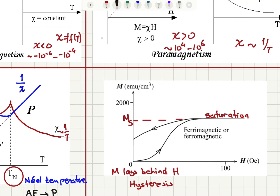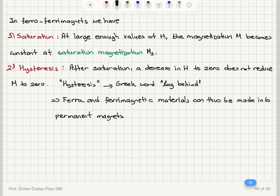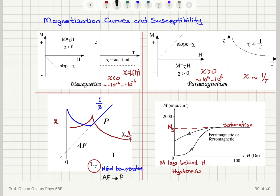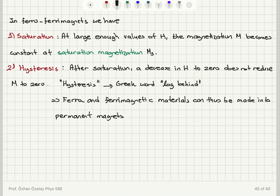For ferromagnetic and ferrimagnetic materials, when we increase the magnetic field the magnetization saturates at a large field value, and when we decrease it back to zero the magnetization lags behind H — it does decrease but doesn't go back to zero. The saturation value of magnetization is called saturation magnetization, and hysteresis is a Greek word for 'lag behind.' These two behaviors — saturation and hysteresis — prove that we're dealing with a ferro or ferrimagnetic material, and because of the non-zero magnetization at zero field we can build permanent magnets out of these materials.